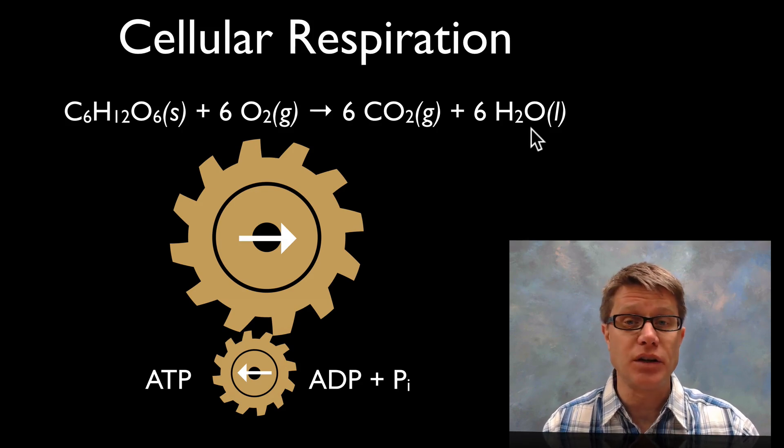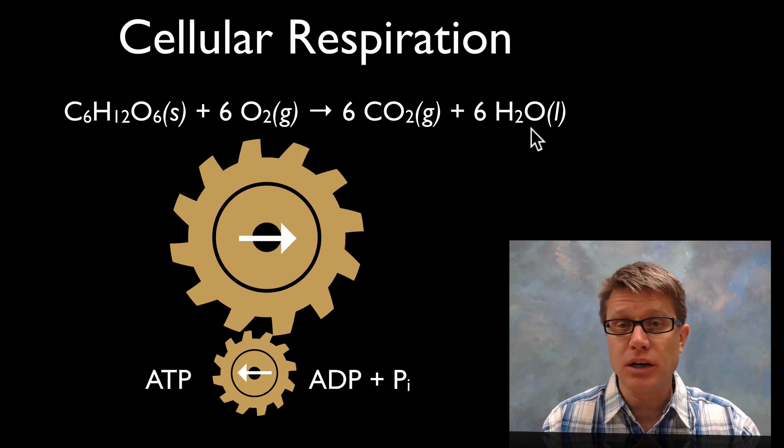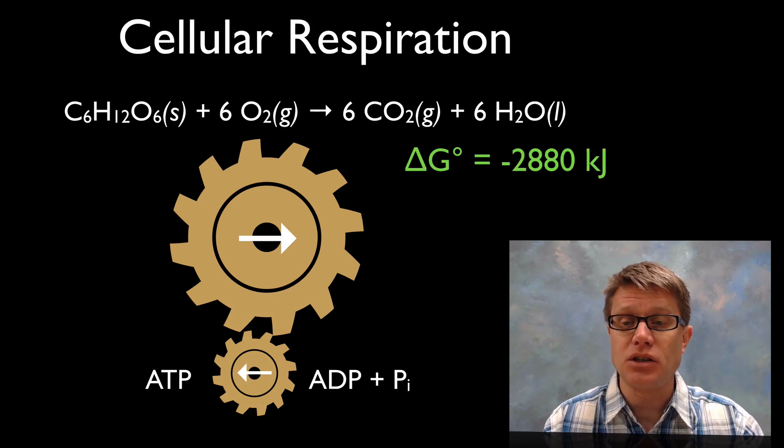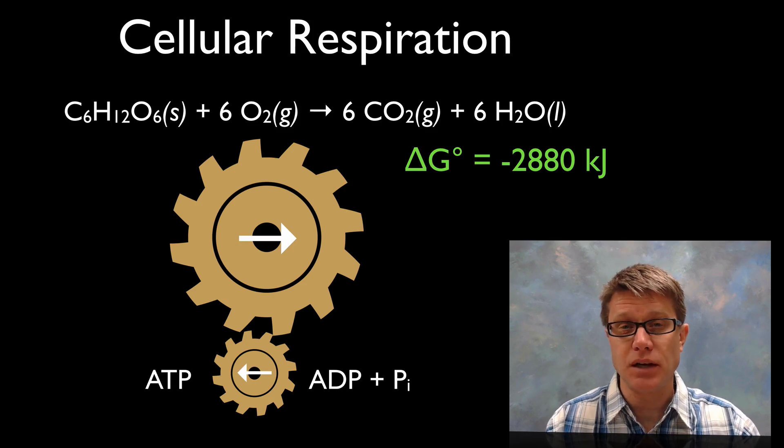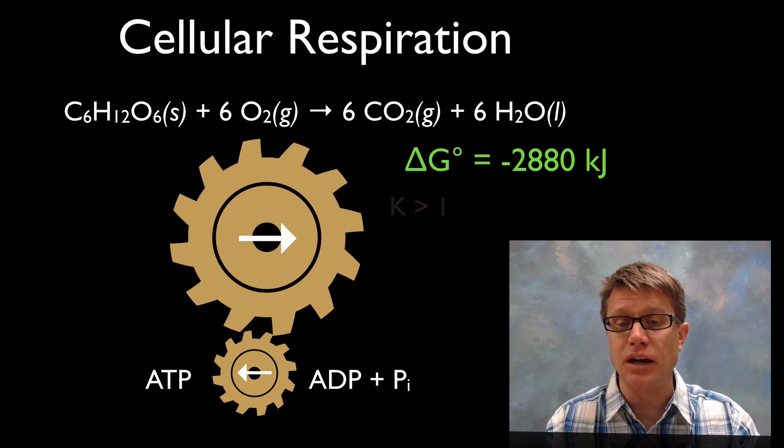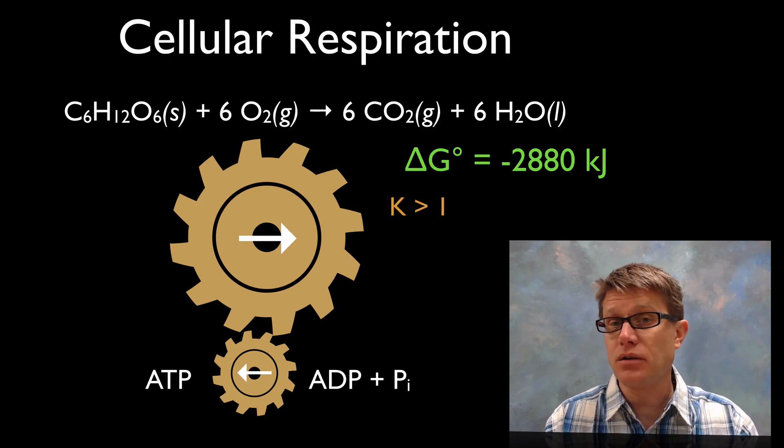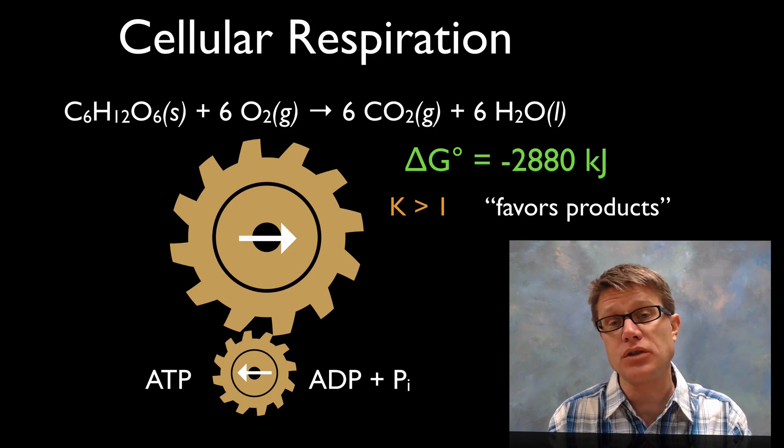It's taking place in all the cells of your body right now. If we were to look it up in the appendices, we'd find our delta G value is going to be negative 2880 kilojoules. So we've got a delta G value that's a negative value. What does that mean? It's going to shift towards the right. So what would our K value be? It's going to be greater than 1. So that's going to favor our products. It's going to move towards the right.